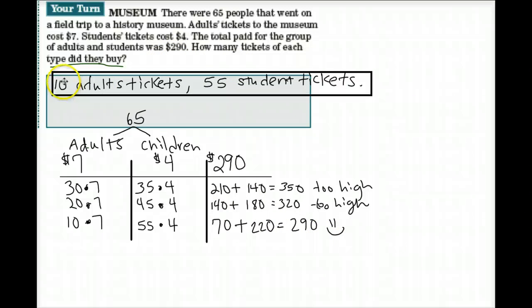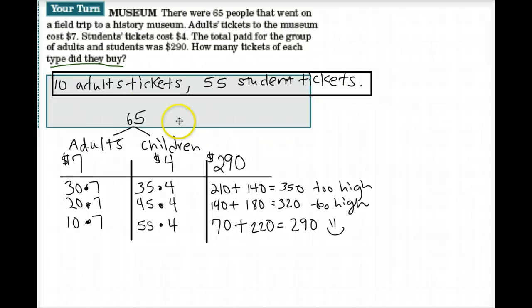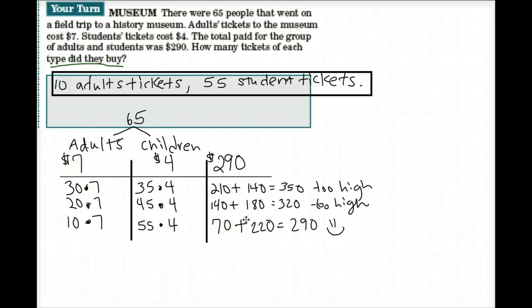The answer is 10 adult tickets and 55 student tickets. This is what you should have — all of this work, if not more. Make sure you know how to use these charts because when we do guess and check, you'll need to make a chart for every single problem. If you don't get it, please watch the video again, and if you still don't get it, please ask one of us.